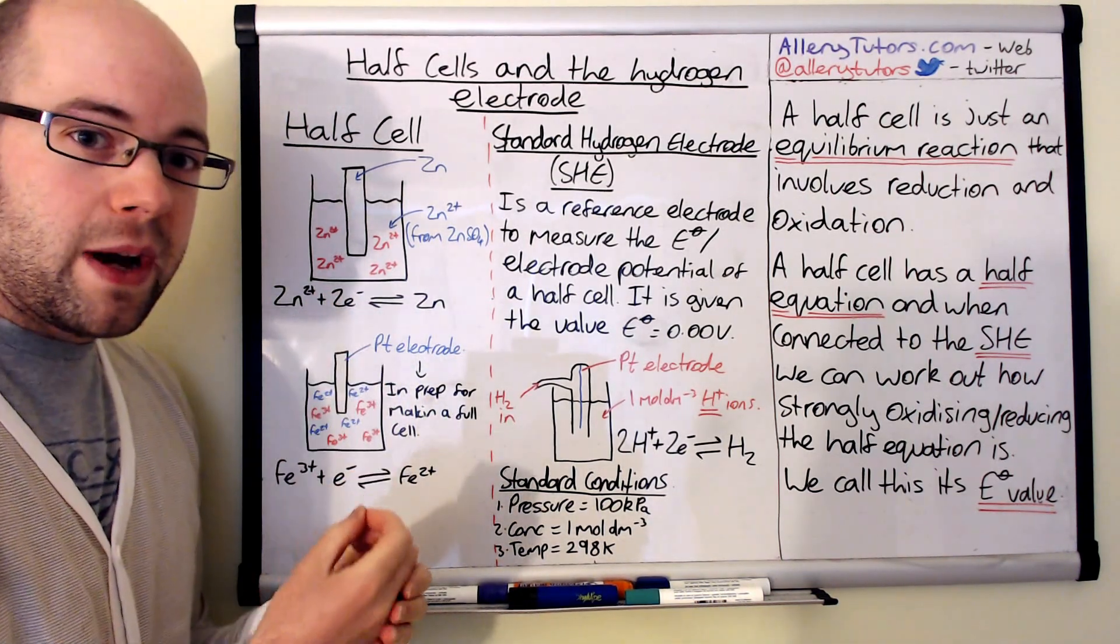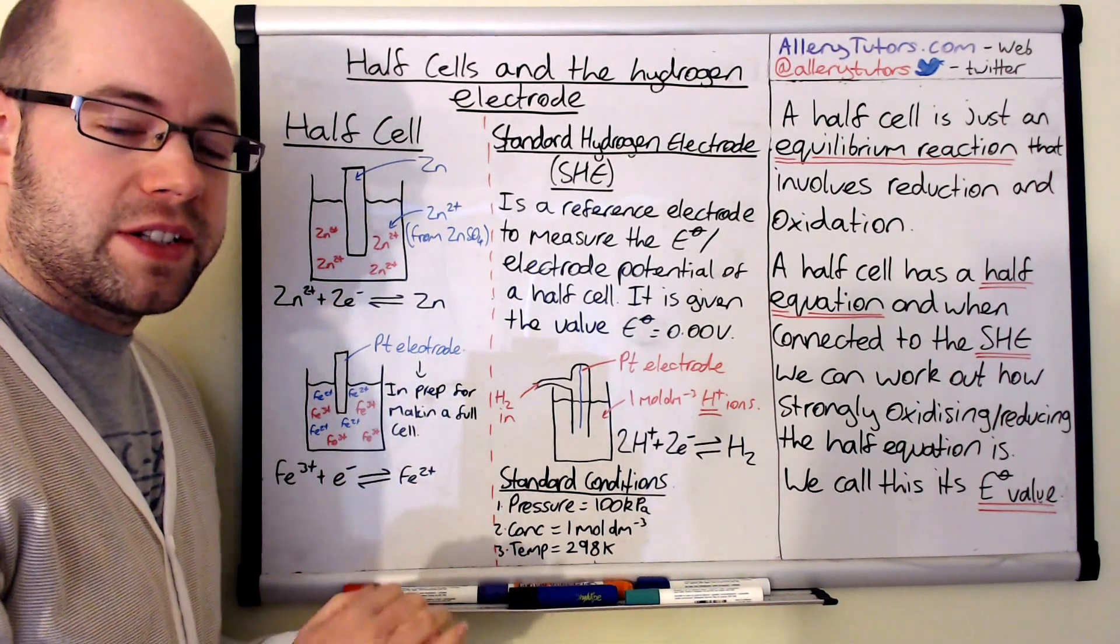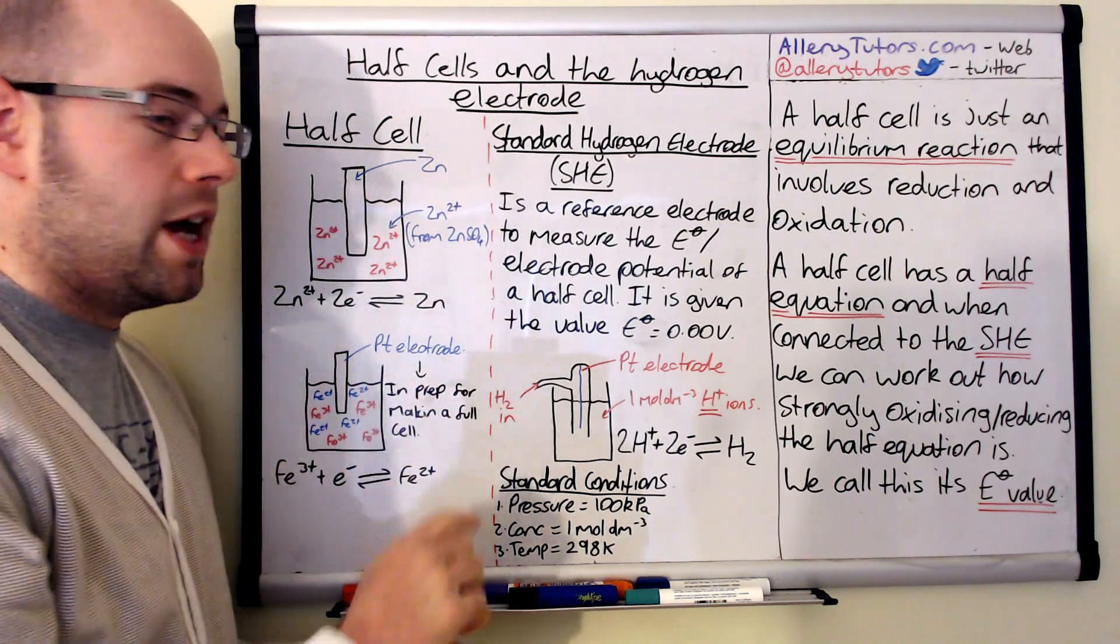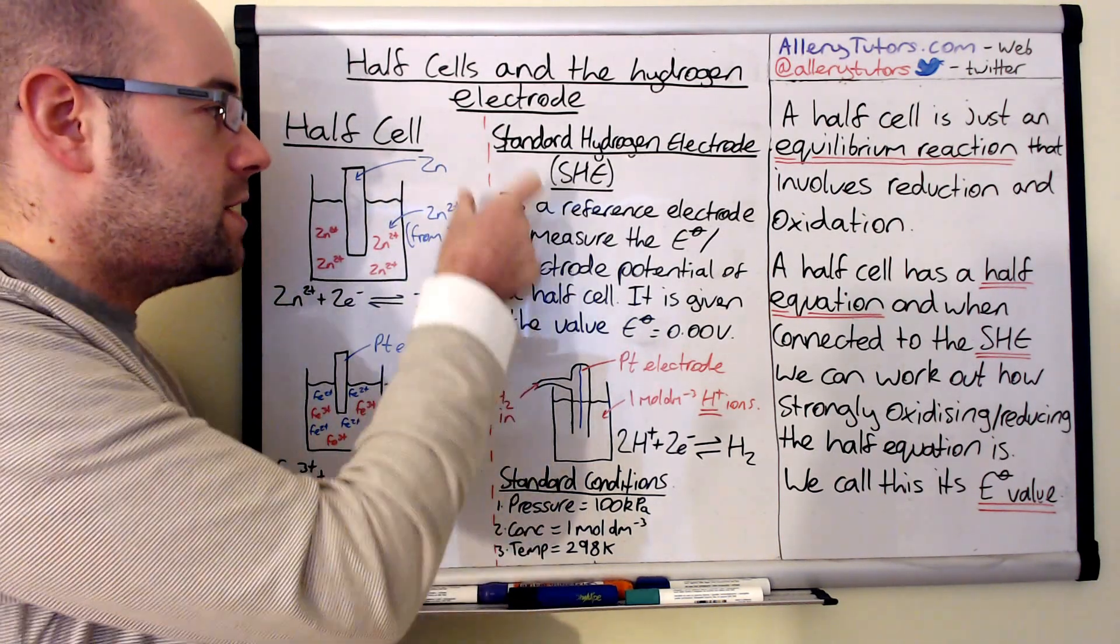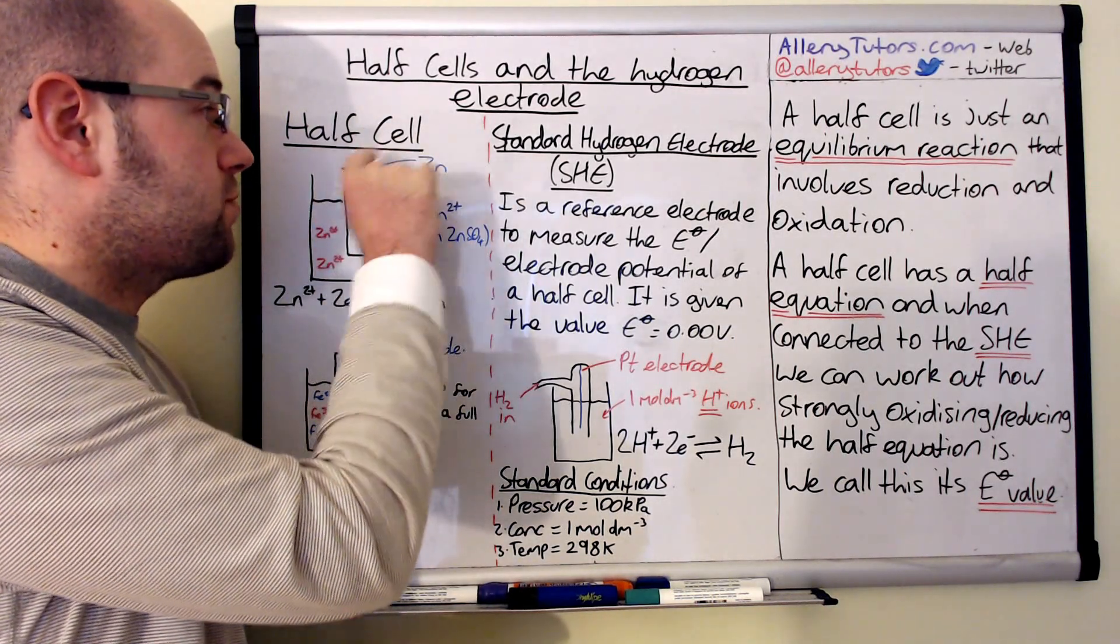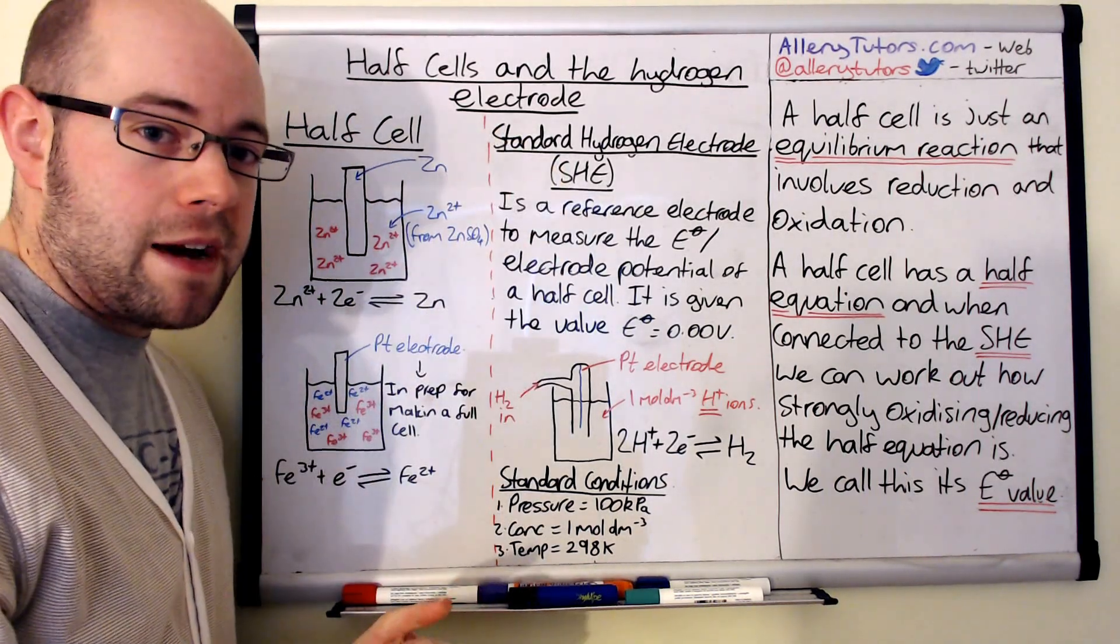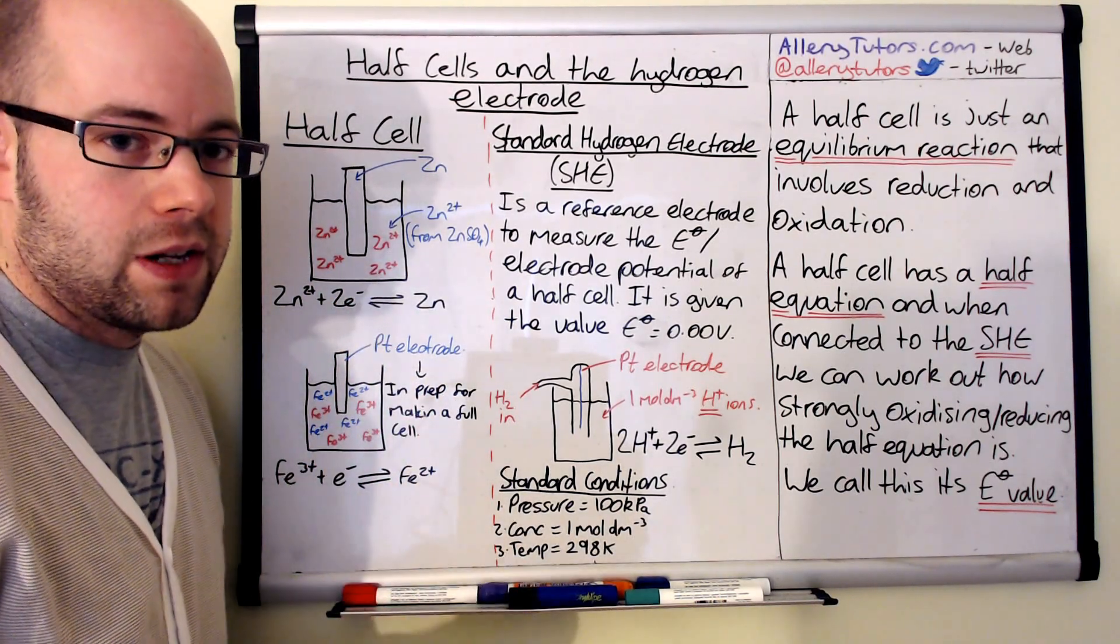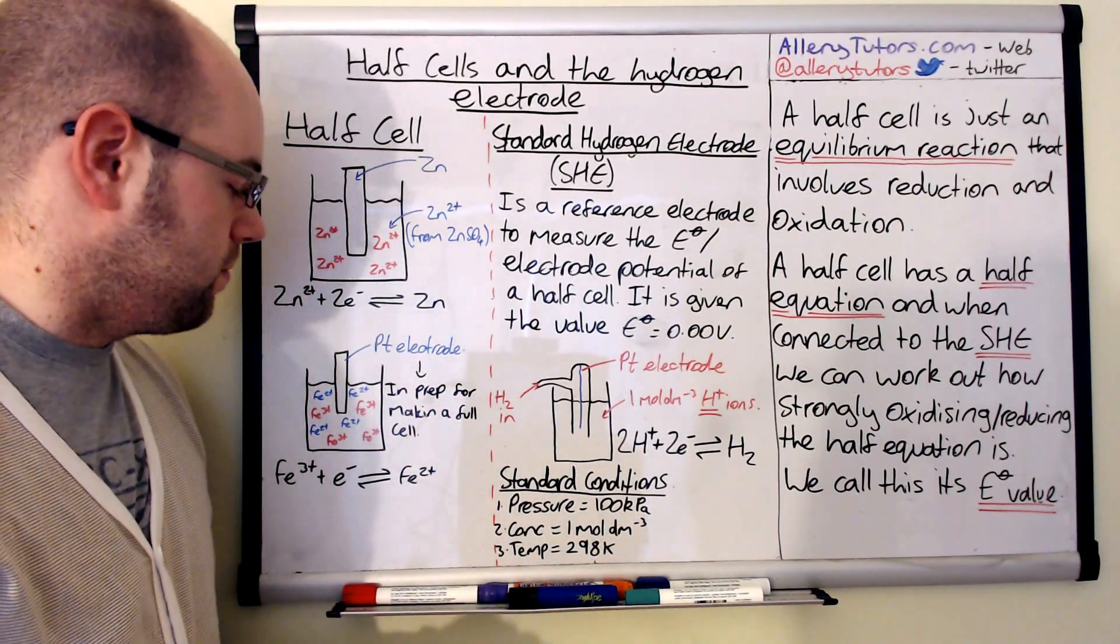So this is where a full cell will actually come into it. We can take this electron. If we connect it with a different type of metal dipped in its solution, then we can effectively use this electron, send it across a wire, and then down into another electrode. But I'm not going to go through this in this video. There is a video that looks into that later on.